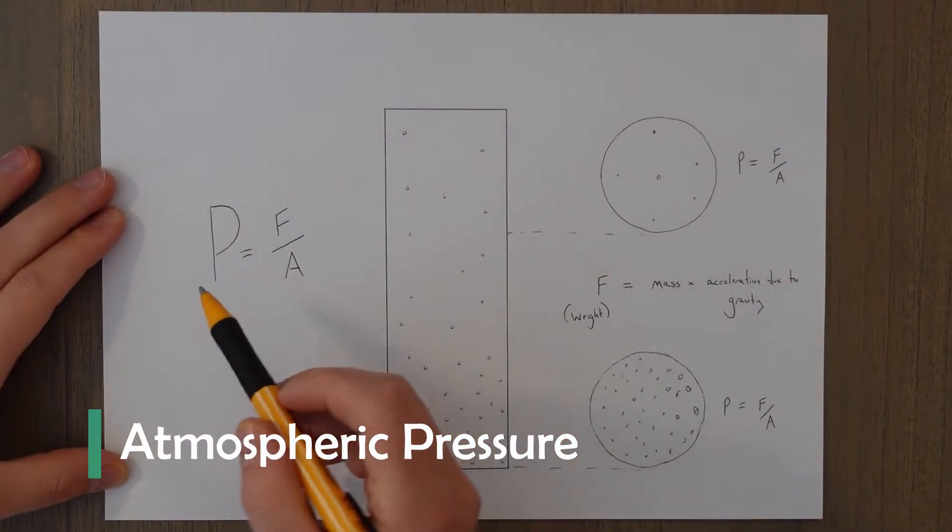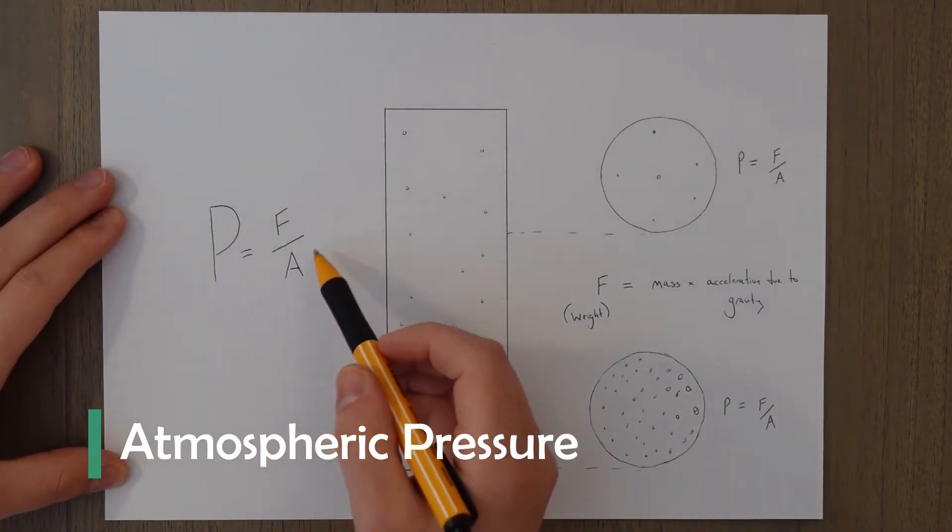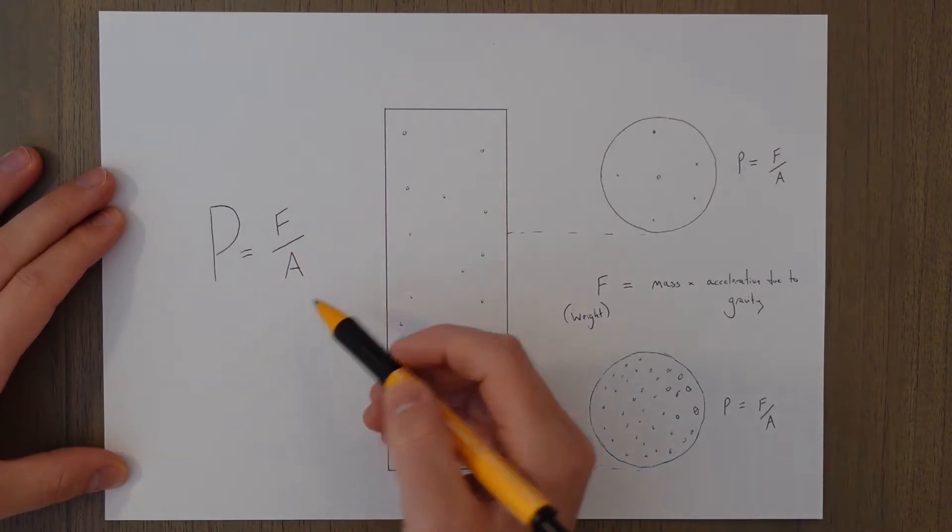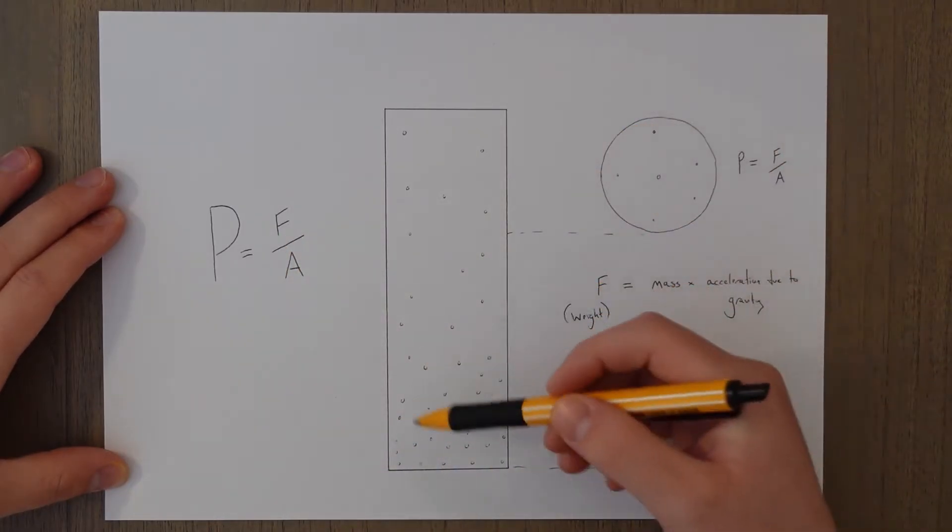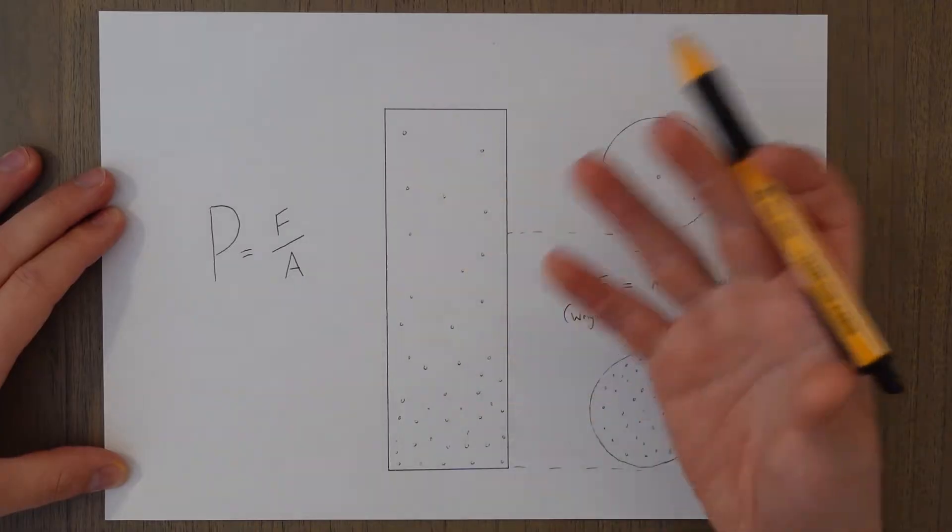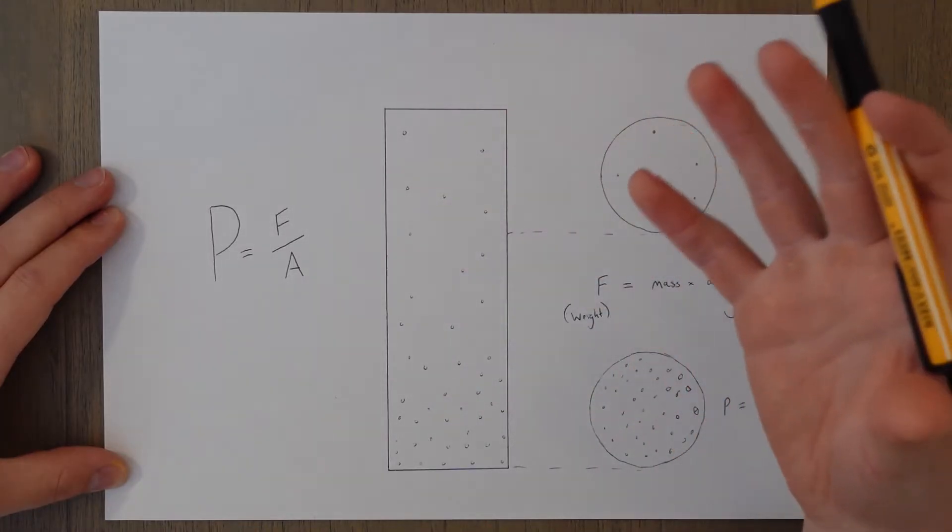Pressure is given by the formula p equals f over a, force over area. If we consider a column of air maybe one kilometer high with a fixed surface area,